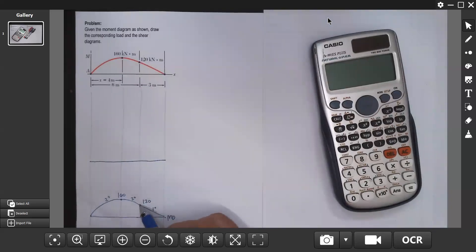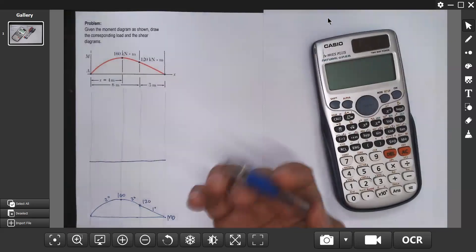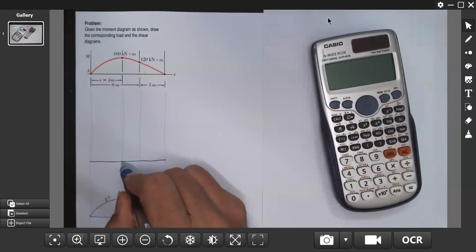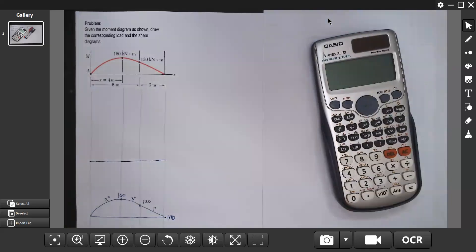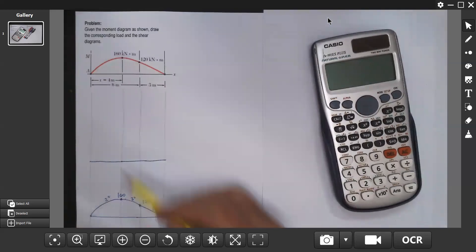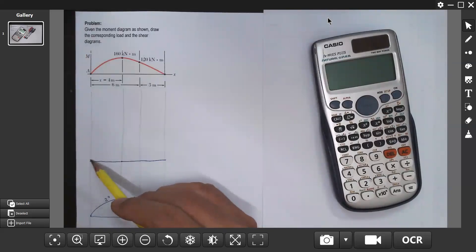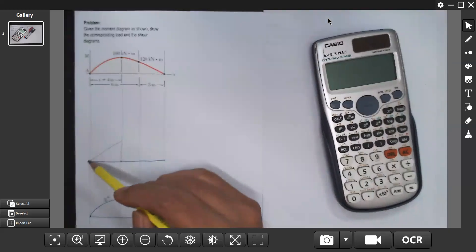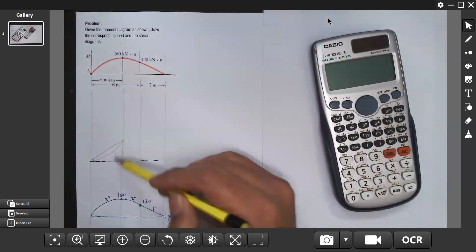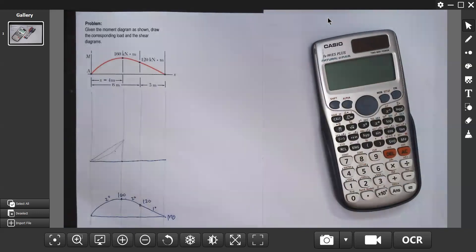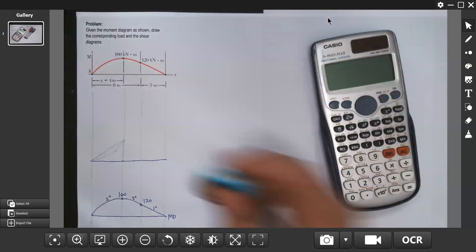Concave downward moment. For second degree moment it means first degree shear diagram. Since this is the maximum moment, shear diagram is zero. Since positive from zero to 160, positive increase, so the area in shear diagram is positive. The area is this one, straight line.